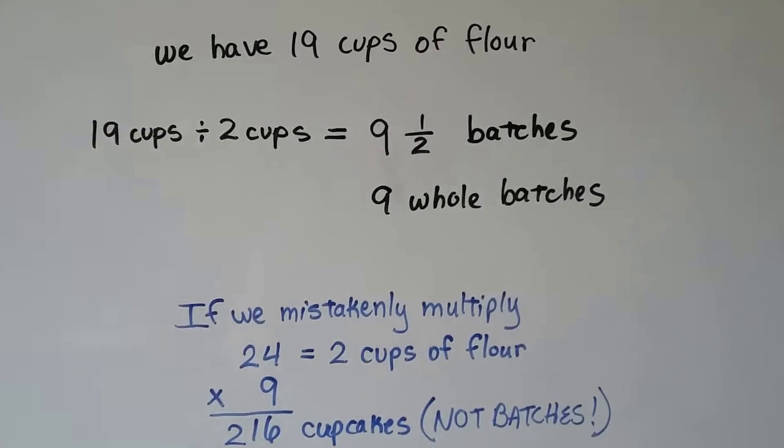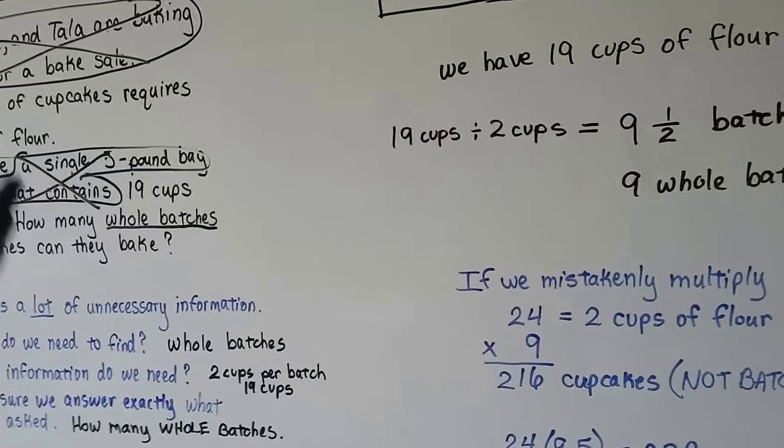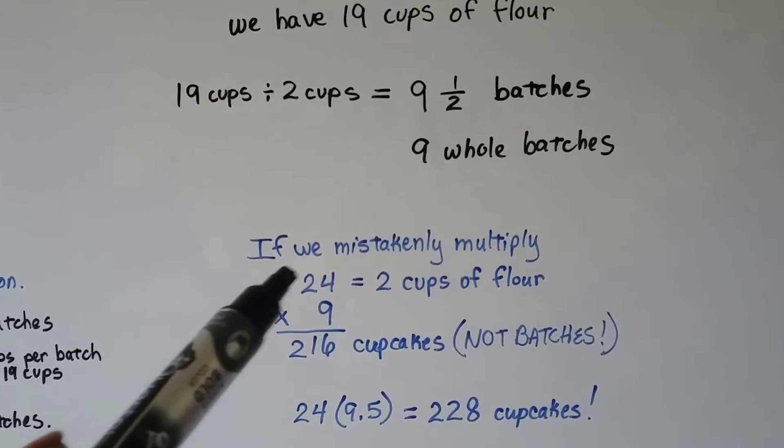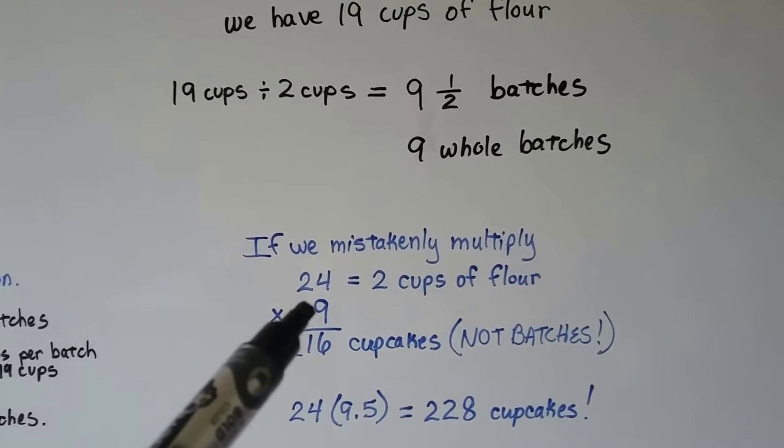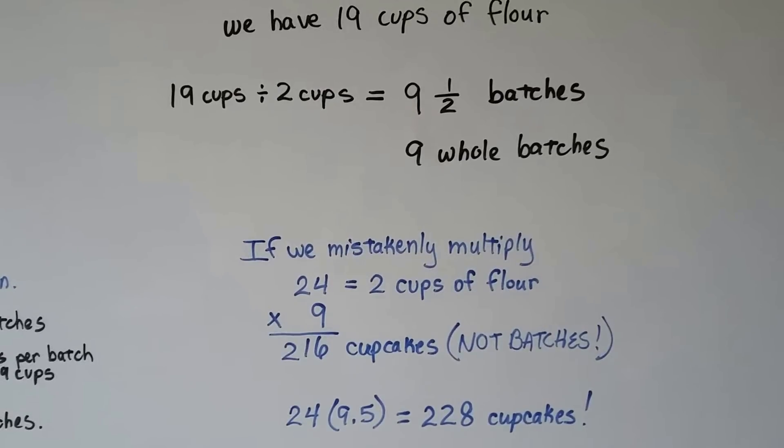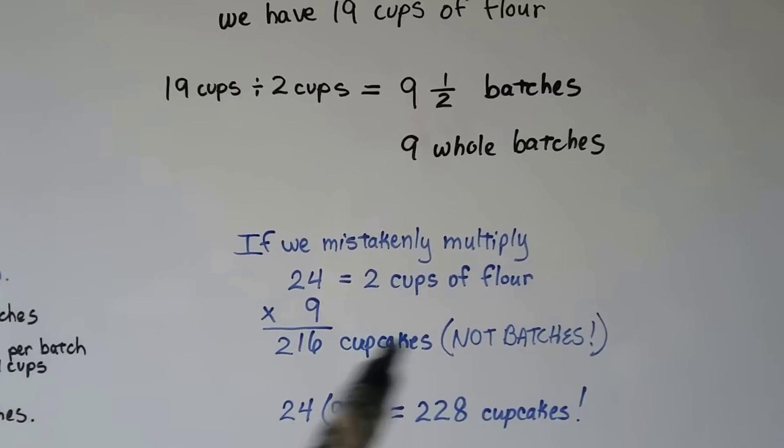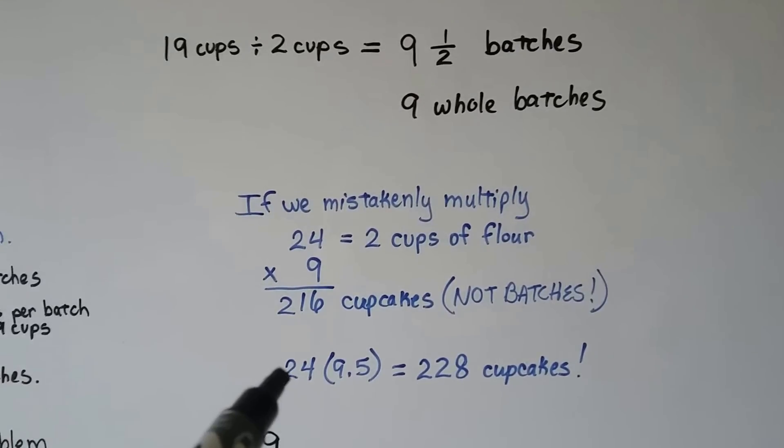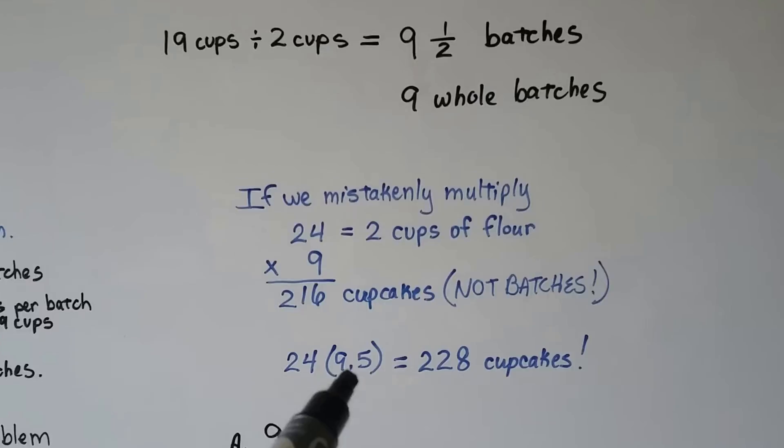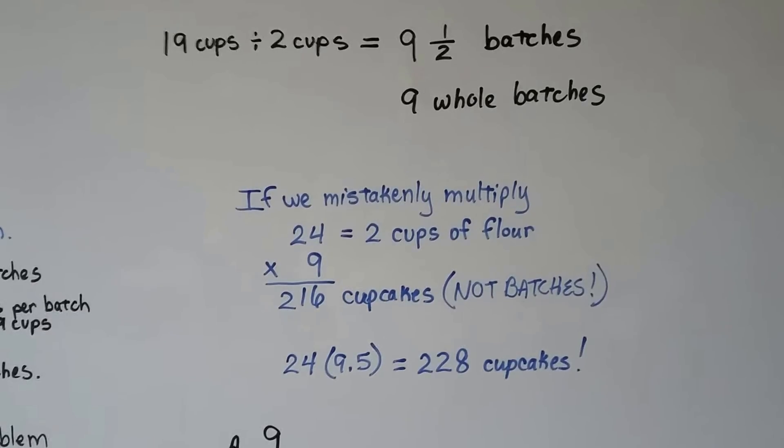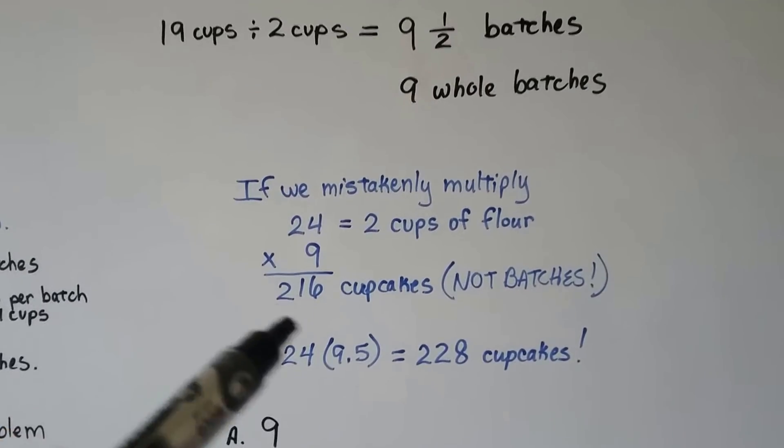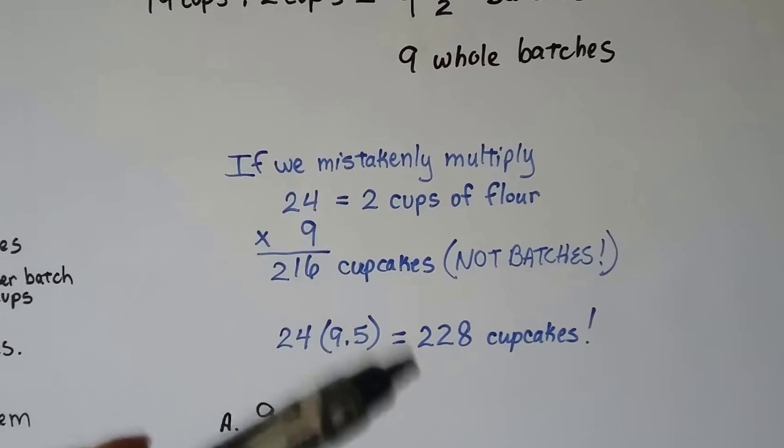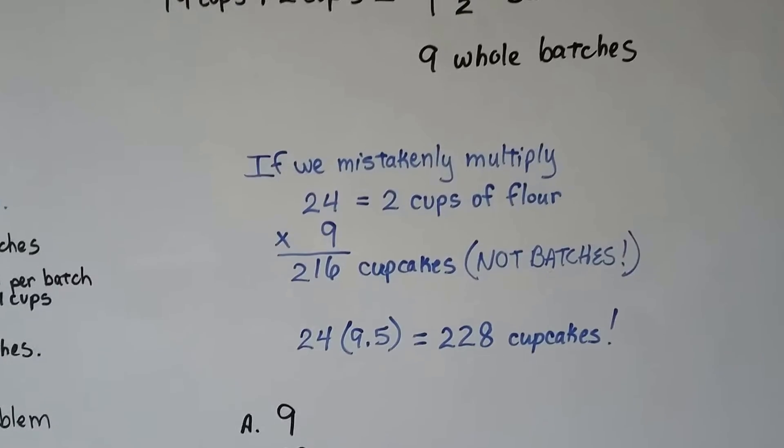If we mistakenly use the information that's not important, and we multiply the 24 times the nine batches, we're going to get 216 cupcakes. That's not batches. That's separate cupcakes. And if we make the mistake of multiplying those 24 cupcakes by the nine and a half, we're going to get 228 cupcakes. Now, keep in mind the 216 and the 228 as an answer because we mistakenly multiplied information we didn't need.